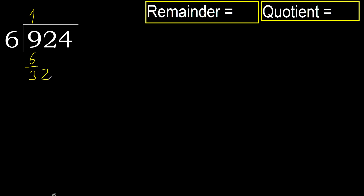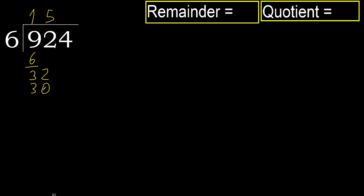Next, bring down: 32. 6 multiplied by 6 is 36, which is greater. Multiply by 5 is 30, which is not greater. Subtract 32 minus 30 equals 2.